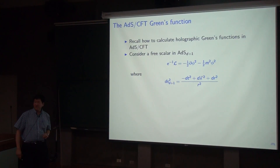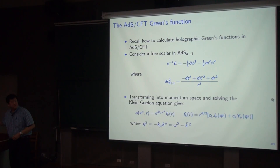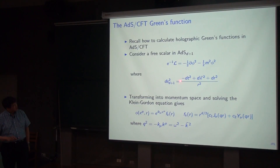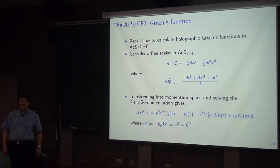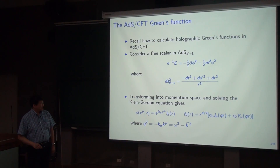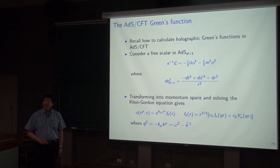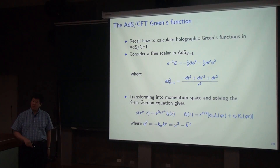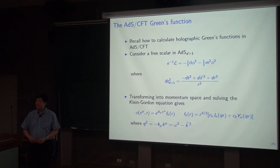To use the ADS/CFT dictionary, we basically want to solve for the classical configuration of the scalar with the appropriate boundary conditions. We solve the scalar field equation using this metric. This is translationally invariant in the time and x directions, so we go into momentum space. The bulk scalar as a function of x and r can be written in terms of the radial solution, which is a familiar Bessel function solution — a second order equation that we can expand in J_nu and Y_nu, or in terms of Hankel functions.